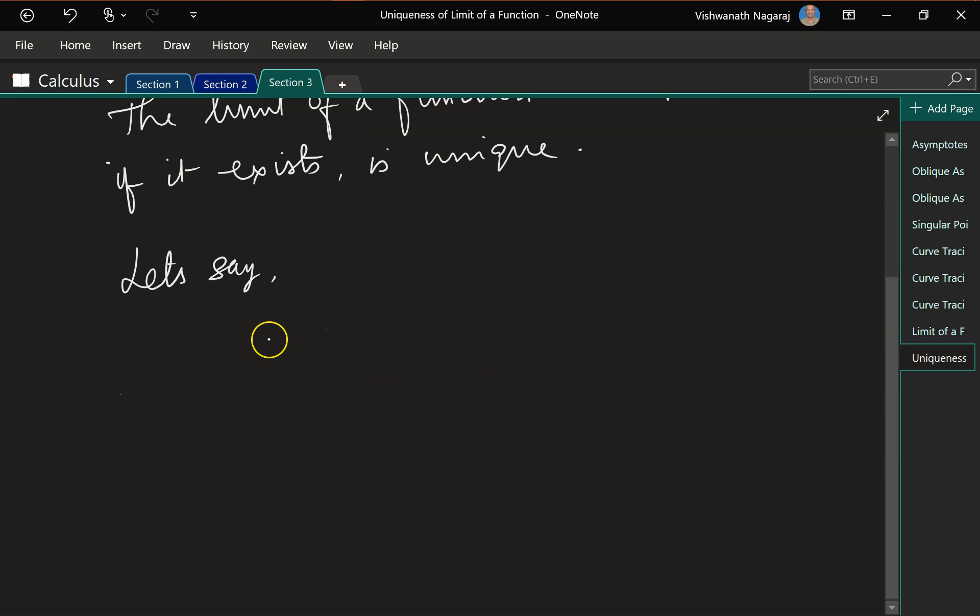So now let's prove this. Let's say there is a function and the limit exists and is not unique, that means not only does f of x have a limit at some point,